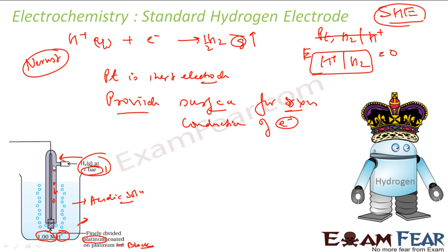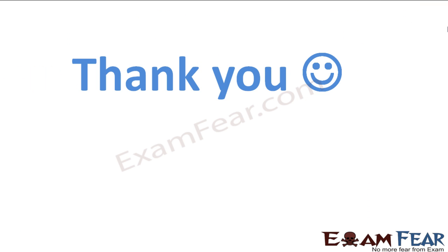So, that is my standard hydrogen electrode here. I have a hydrogen gas here. Platinum rod. And this is the acidic solution H+. So, hydrogen gas becomes H+. Thank you.